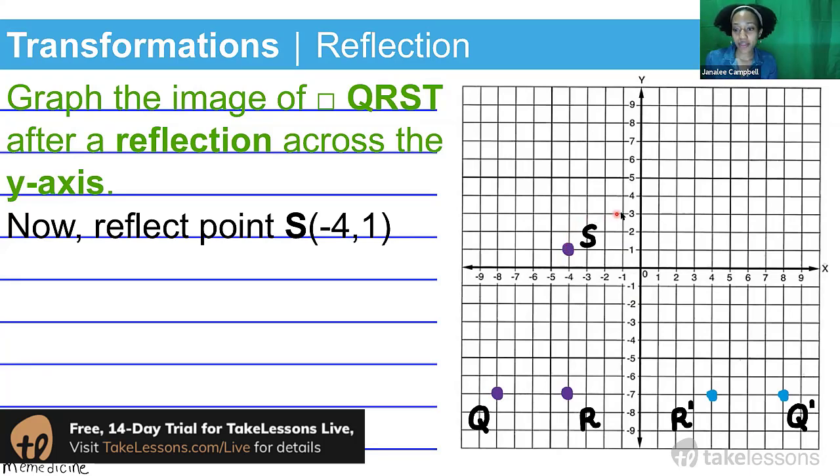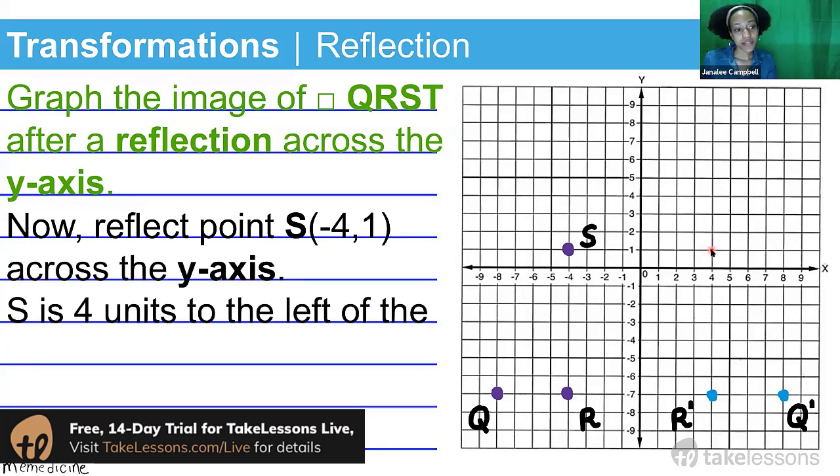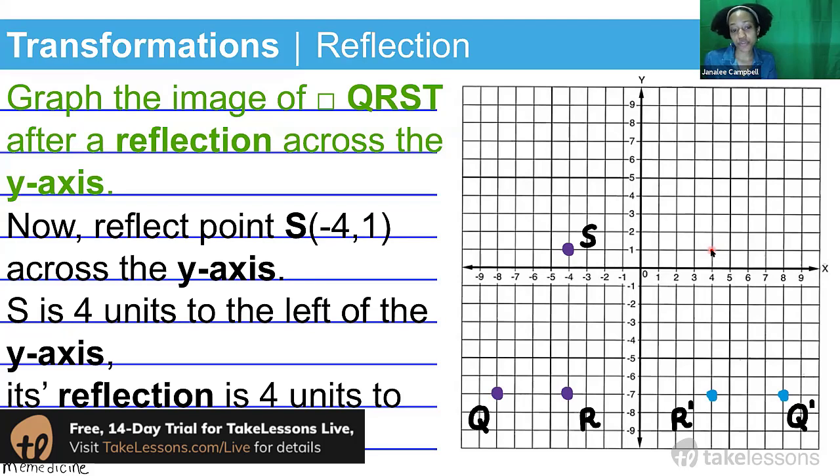To flip it about the y-axis, we're just going to shift it equidistantly with respect to the y-axis. So if S is four units to the left of the y-axis, to reflect it, we have to move it four units to the right of the y-axis.